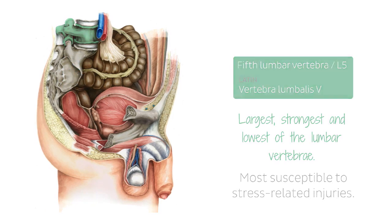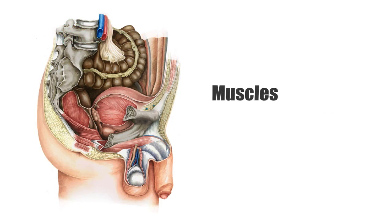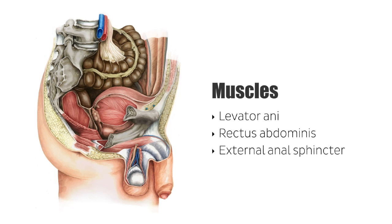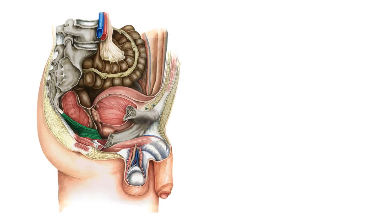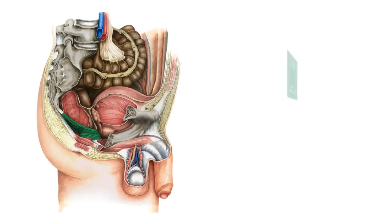We're going to move forward and talk about some of the muscles visible in this image. We'll be discussing the levator ani, the rectus abdominis, and the external anal sphincter. Starting with the levator ani muscle, highlighted in green — there is a cut in the muscle here, so keep in mind it should extend to cover this area.